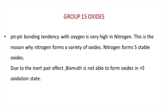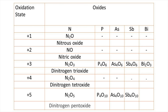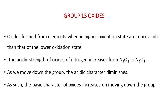Nitrogen forms five stable oxides. Due to the inert pair effect, bismuth is not able to form oxides in the plus five oxidation state. The table shows the different types of oxides of group 15 elements and their oxidation states.